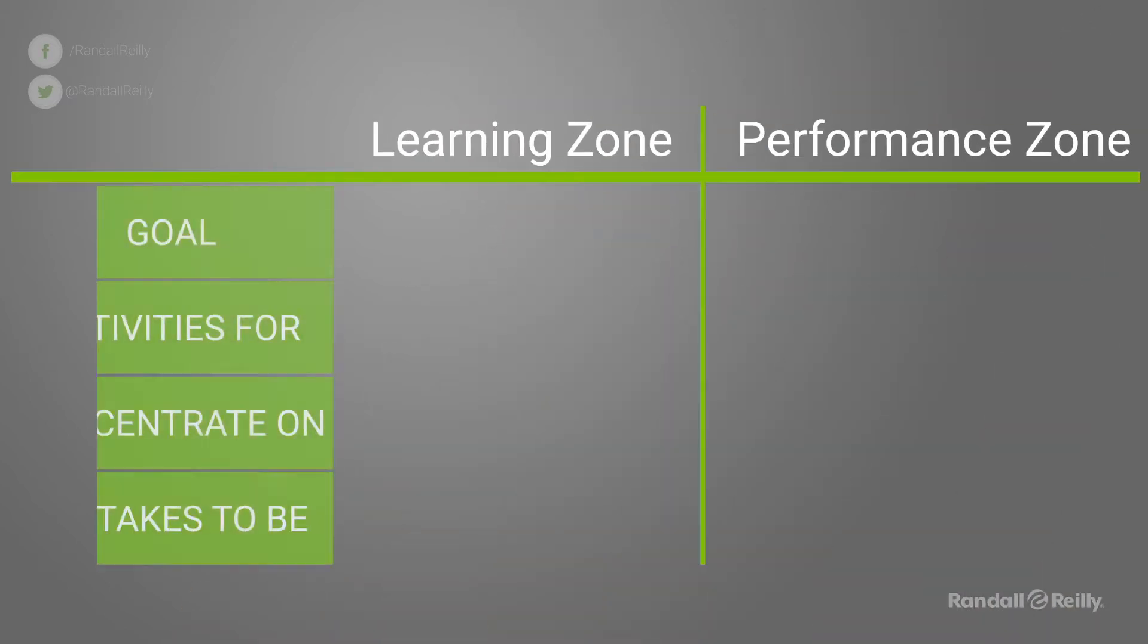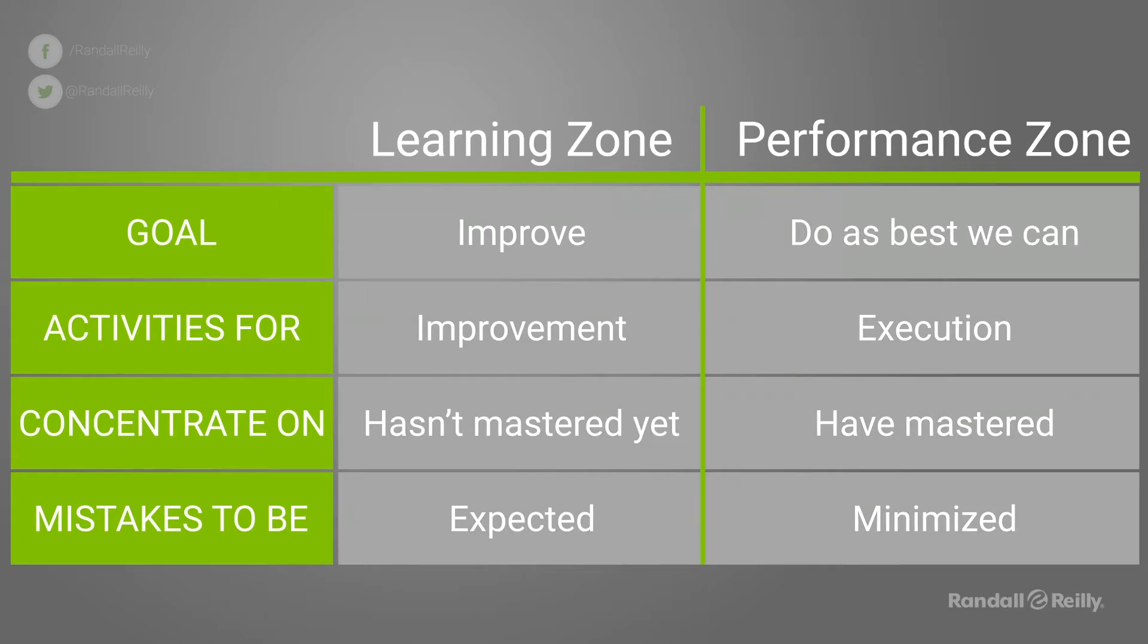The learning zone is all about trying to practice, improve, and grow your knowledge, while the performance zone is more about focusing on what you know and executing to accomplish the goal at hand. The problem is most recruiters tend to stay in the performance zone. They focus on the end goal without ever thinking about how they could possibly improve.